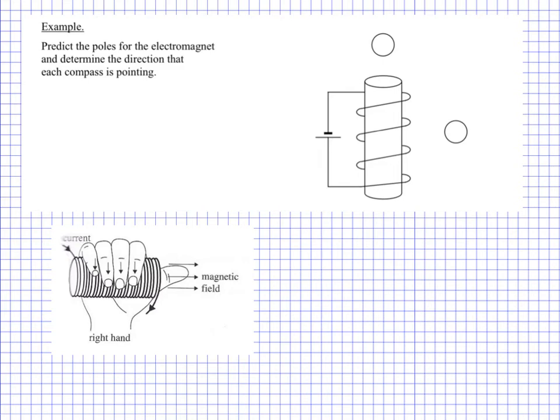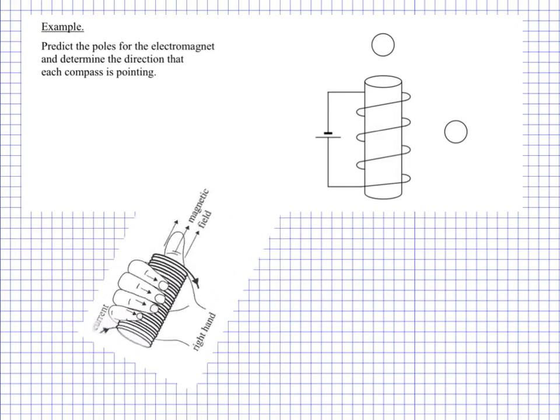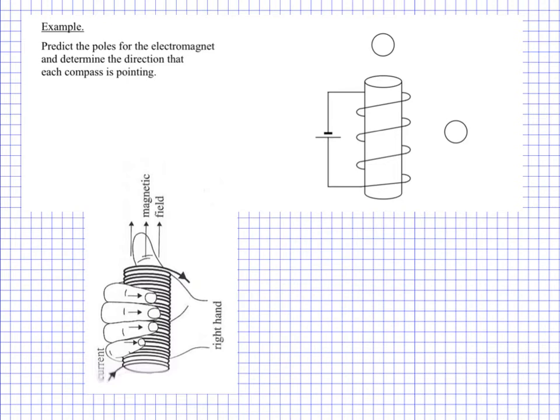So here we have a solenoid situation, and this requires our second hand rule. We're going to use our fingers, curling our fingers to make the electric current. And then our thumb will indicate the direction of the magnetic field. So I have here a picture of a right hand rule. This would be for a positive current flow.